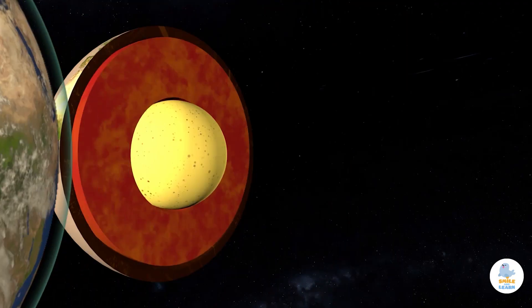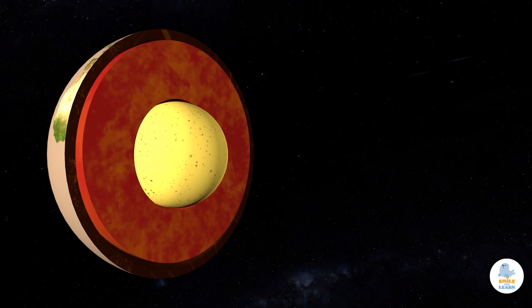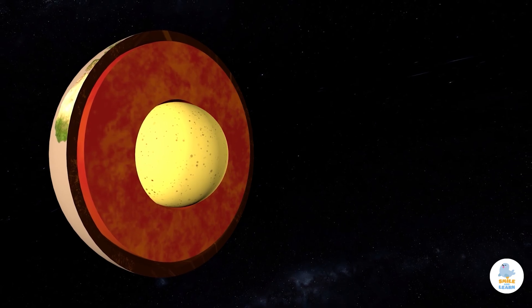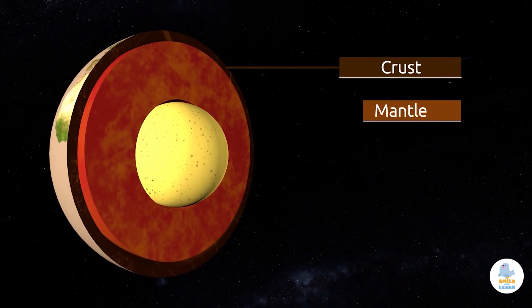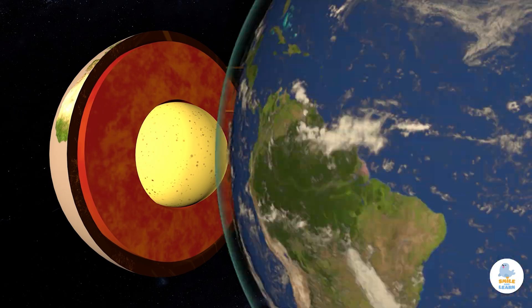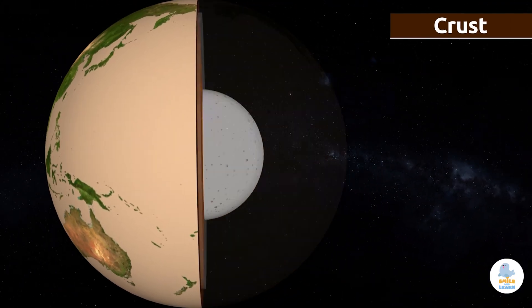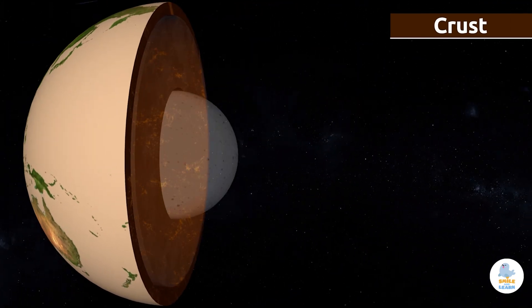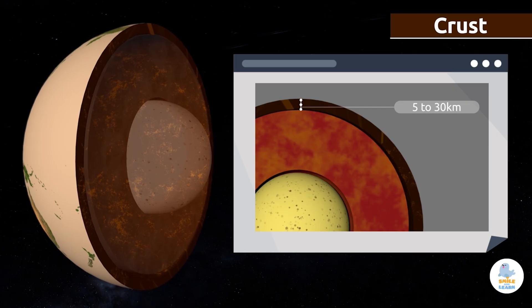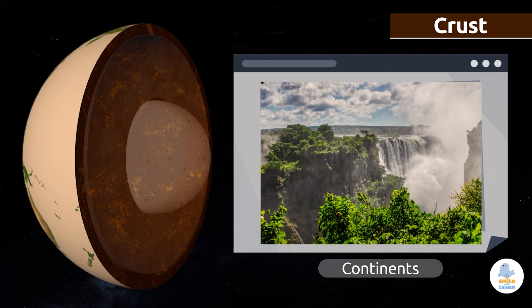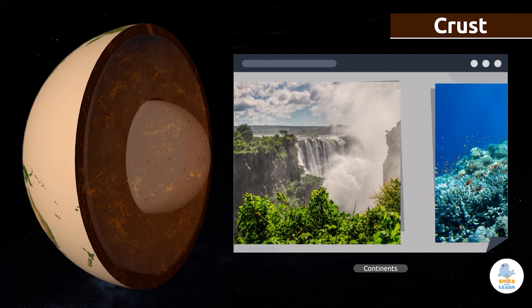The Geosphere is made up of three concentric layers: the crust, the mantle, and the core. The crust is the thinnest, outermost layer of the Geosphere. The thickness of the crust varies from 5 to 30 kilometers, depending on where you are on the Earth. The crust is made up of continents and the bottoms of the oceans.